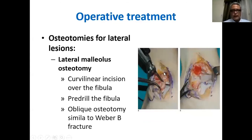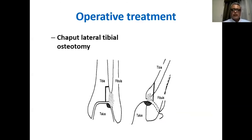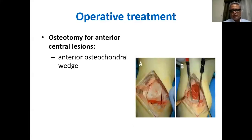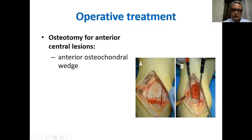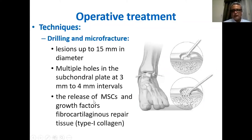If you have a lateral lesion, you can do a lateral malleolus osteotomy, making a curved incision over the fibula with pre-drilling and an oblique osteotomy of the fibula, then reflect the fibula. Sometimes anterolaterally, you can reflect a flap of the tibia based on the anteroinferior tibiofibular ligament — called the chaput lateral tibial osteotomy. Very uncommonly, an anterior central osteotomy can be performed, taking a quadrangular area of the anterior tibial plafond and reflecting it to expose the talar surface, though this is considered very aggressive.